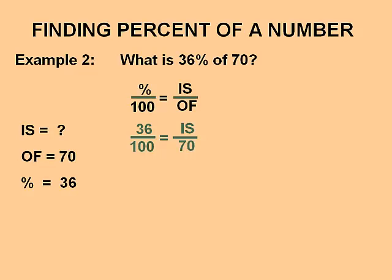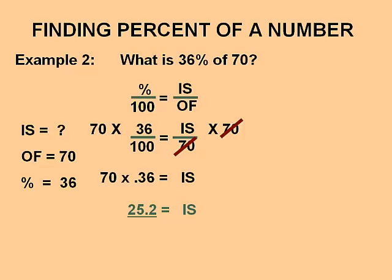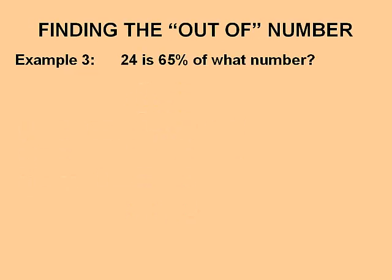Now let's calculate for 'is.' The 'is' is divided by 70, so to eliminate that we multiply both sides of the equation by 70. On the right side, 70 divided by 70 leaves just 'is.' On the other side, 36 divided by 100 gives us 0.36, and multiplying by 70 gives our answer: 25.2.